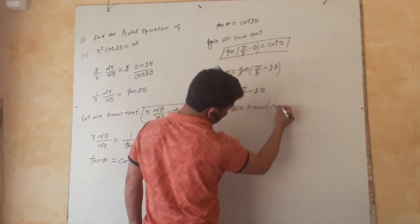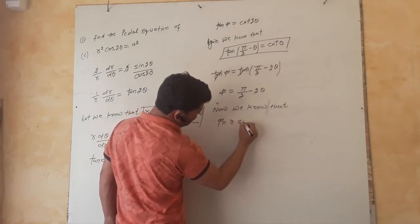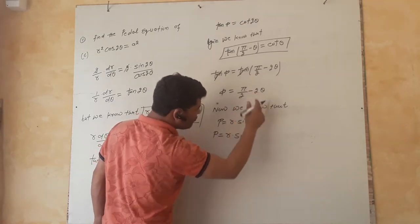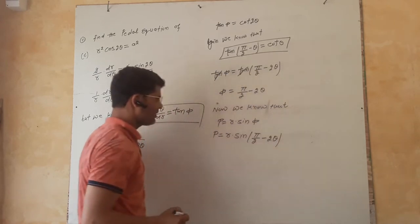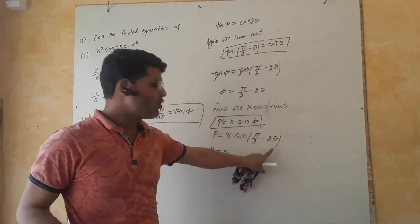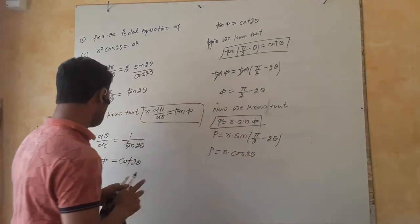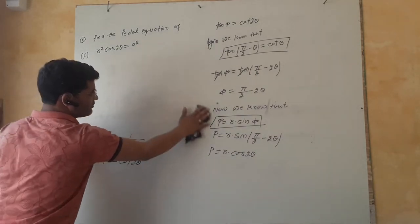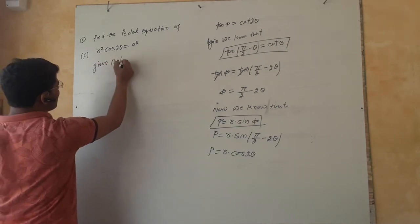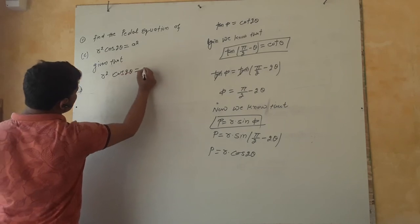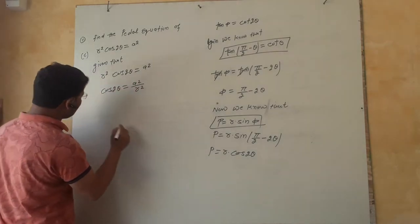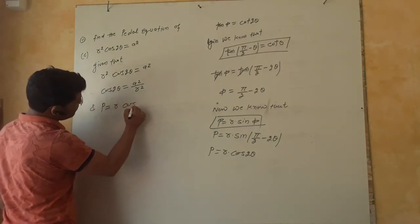We know that P equals R sin φ. Putting the value of φ, which is π/2 minus 2θ, we get P equals R · sin(π/2 − 2θ), which equals R · cos 2θ.